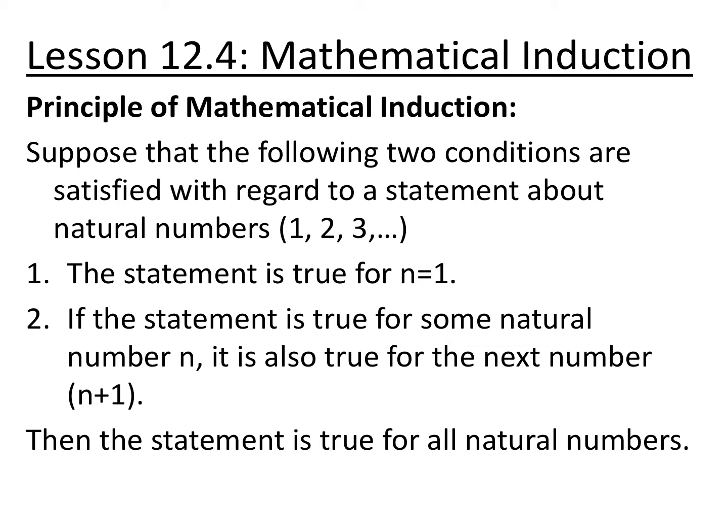First, we prove that the statement is true for n equals 1. Then we assume that it's true for some natural number n — we prove it's true for 1, we assume it's true from 2 up to n. Then we prove it's true for n plus 1. If both of these conditions hold, then the statement is true for all natural numbers.